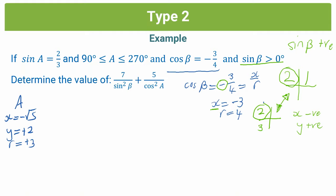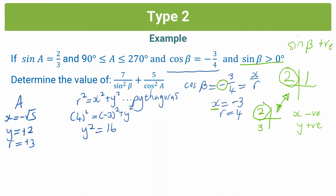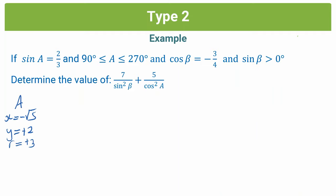So beta must be in quadrant 2, where x is negative and y is positive. We've already correctly assigned negative 3 to x. Now let's use Pythagoras to solve for y. r squared equals x squared plus y squared. Substituting in: 4 squared equals negative 3 squared plus y squared. y squared equals 16 minus 9, so y squared equals 7. y equals positive root 7, because we've established we're dealing with the second quadrant. So for beta: x is negative 3, y is positive root 7, and r is 4.